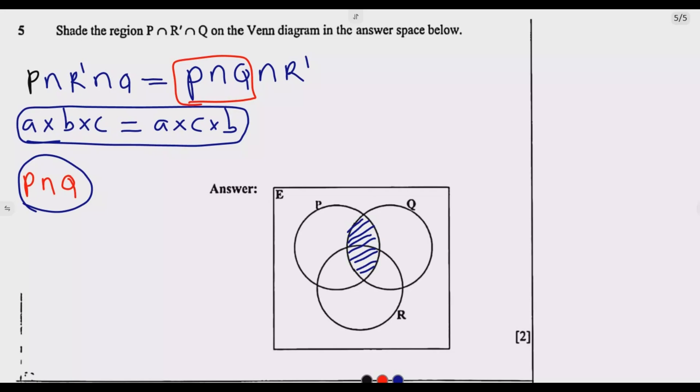So now in this intersection, remove whatever is found in that intersection between P and Q and also is found in R, because R complement means what is not found in R. So you remove this part. Whatever you remain with is P intersection R complement intersection Q.